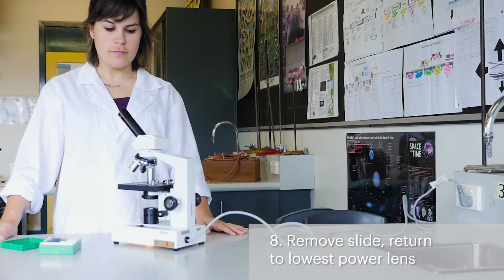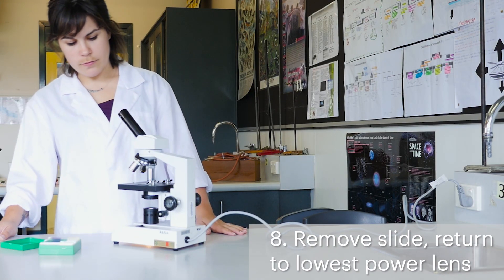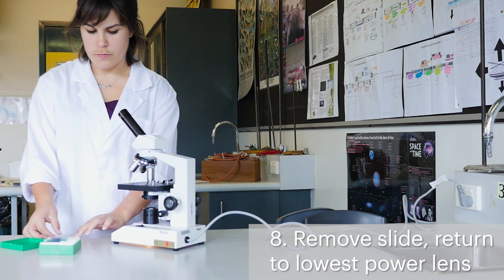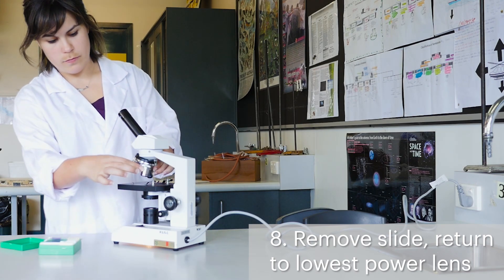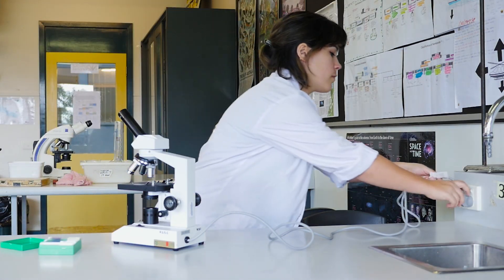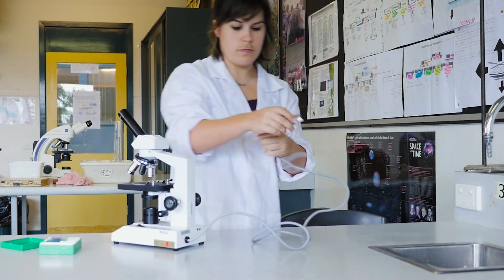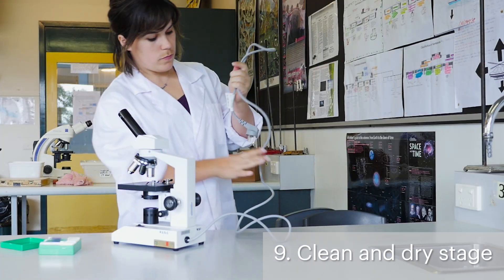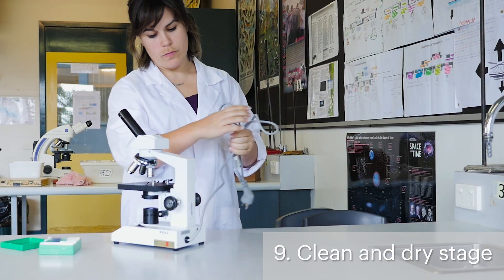When you've finished using the microscope, remove the slide and rotate the lowest power lens in place. Turn off the microscope and unplug it from the power source. Check that the stage is clean and dry. Wipe it with a cloth if necessary.